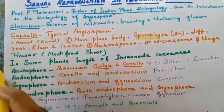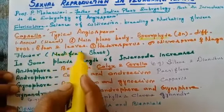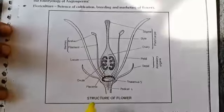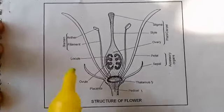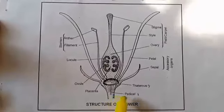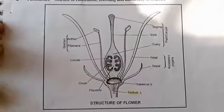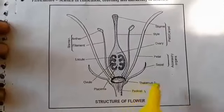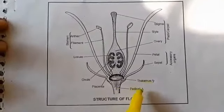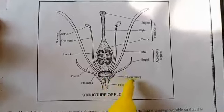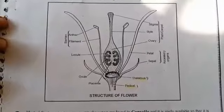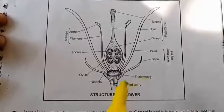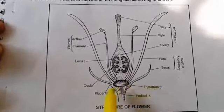Next, we will see the structure of a flower. A flower is a modified shoot — it's very important. Now, let us see the structure of a flower. You can see this picture. The stalk of the flower is called the pedicel. The tip of the pedicel is flattened and becomes dome-shaped; that is called the thalamus. The thalamus is a type of modified stem on which nodes and internodes are present.